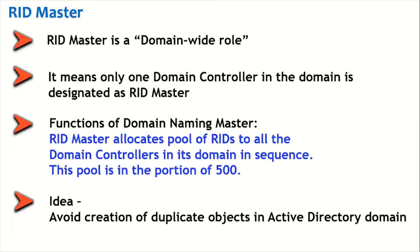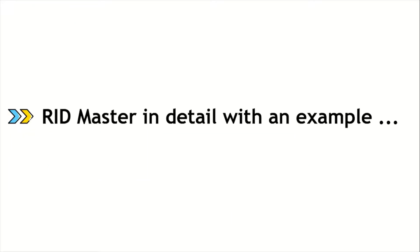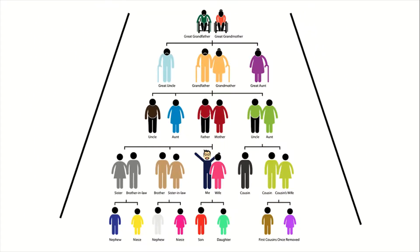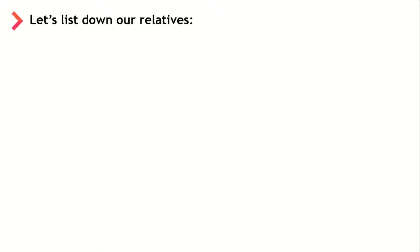We are going to look at the function and how this mechanism avoids creation of duplicate objects in the Active Directory domain. Let us understand RID Master in detail with a real-life example. You might have seen such pictures — this is a family tree, and it also resembles our Active Directory domain. Every member in this particular family is unique — there is no similarity at all, it is absolutely unique.